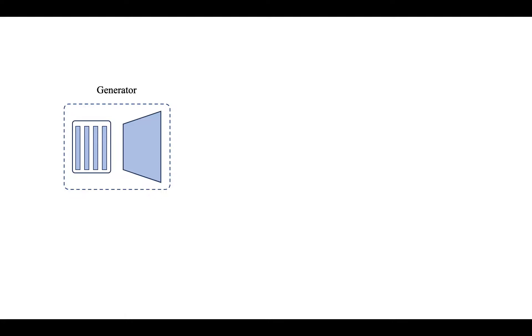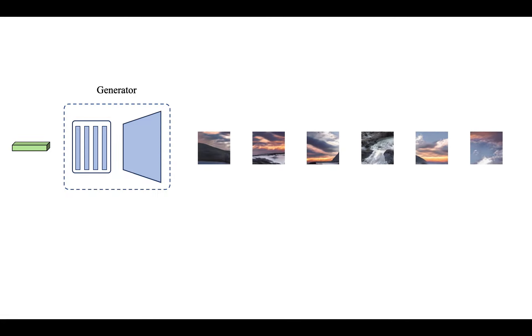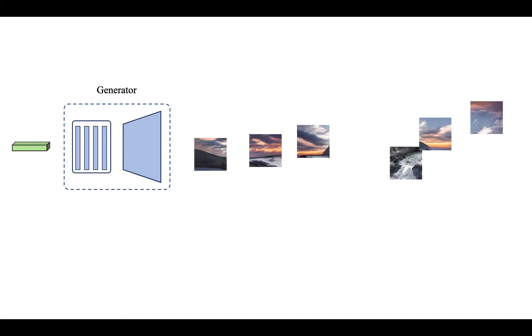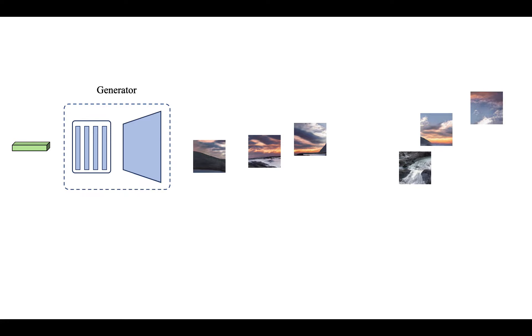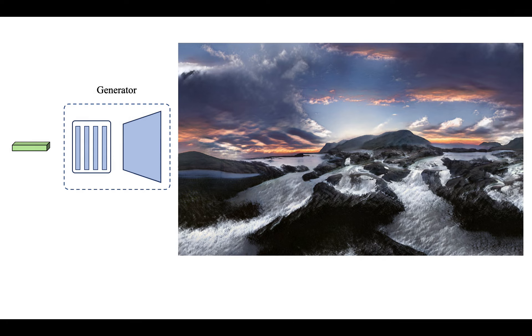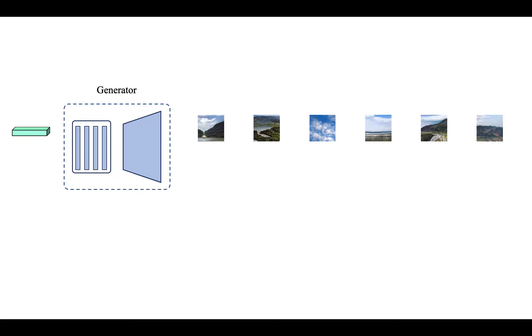With a shared global latent variable and a coordinate system, the generator can synthesize diverse patches subject to a holistic appearance. The fully convolutional texture synthesizer ensures that independently synthesized patches seamlessly conform to the scene. We further demonstrate a spatial fusion generation paradigm: given two global latents, we can smoothly fuse the global latent variables into one image.